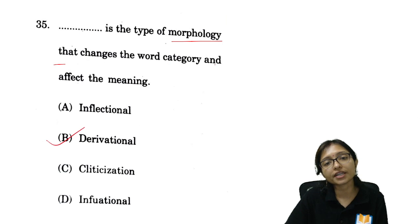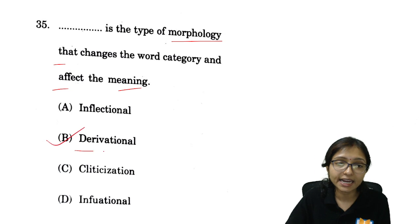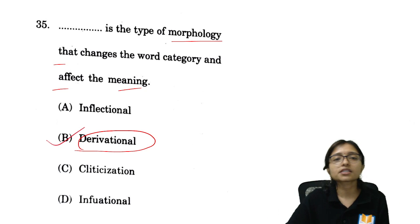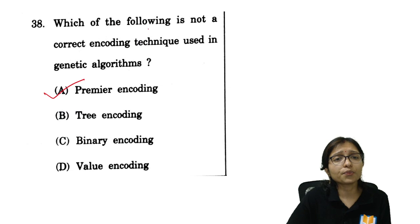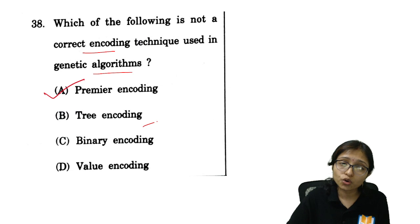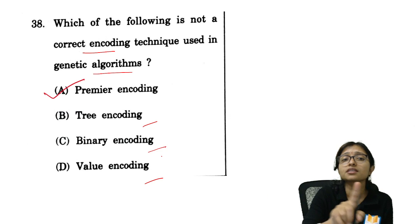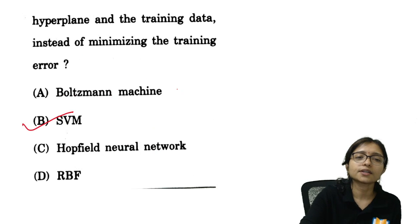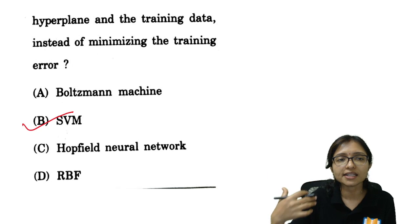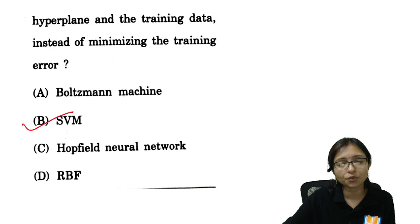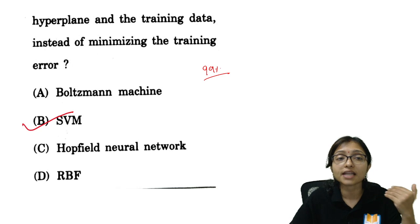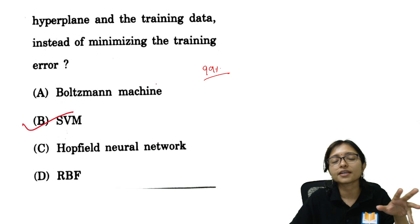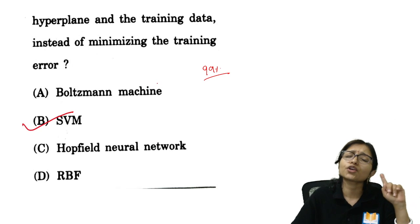Next: the type of morphology that changes word category and affects meaning is derivational morphology — there are two types of morphology. Next: for genetic algorithms, the encoding techniques are binary encoding, value encoding, tree encoding, and permutation encoding. The option 'premier' is not a valid encoding technique, so that should be the correct answer. Note: these are not official answer keys — according to my understanding, I expect this to be more than 90% correct.